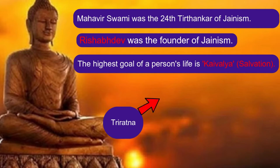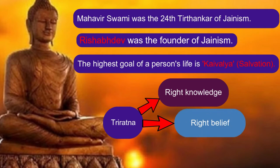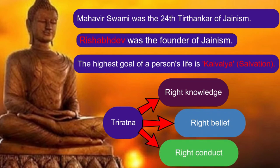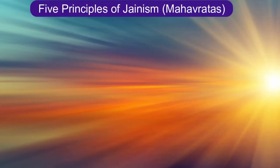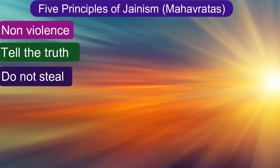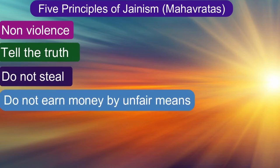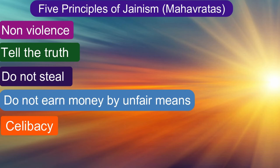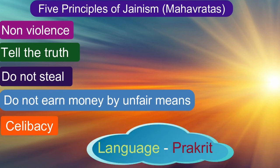The 3 Ratnas are Right Knowledge, Right Belief, and Right Conduct. In order to acquire these 3 Ratnas, one must observe the 5 Great Vows, or Panch Mahavritas. The Panch Mahavritas are: Non-violence, Truth, Do Not Steal, Do Not Earn Money by Unfair Means, and Celibacy, which means Brahmacharya. The language used by common people and for teaching was Prakriti.